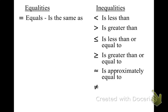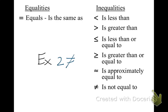Our last symbol is the equal sign with lines slashed through it, which means is not equal to. For example, 2 is not equal to 4. This symbol we already know, so make sure you have all these different symbols in your notes.